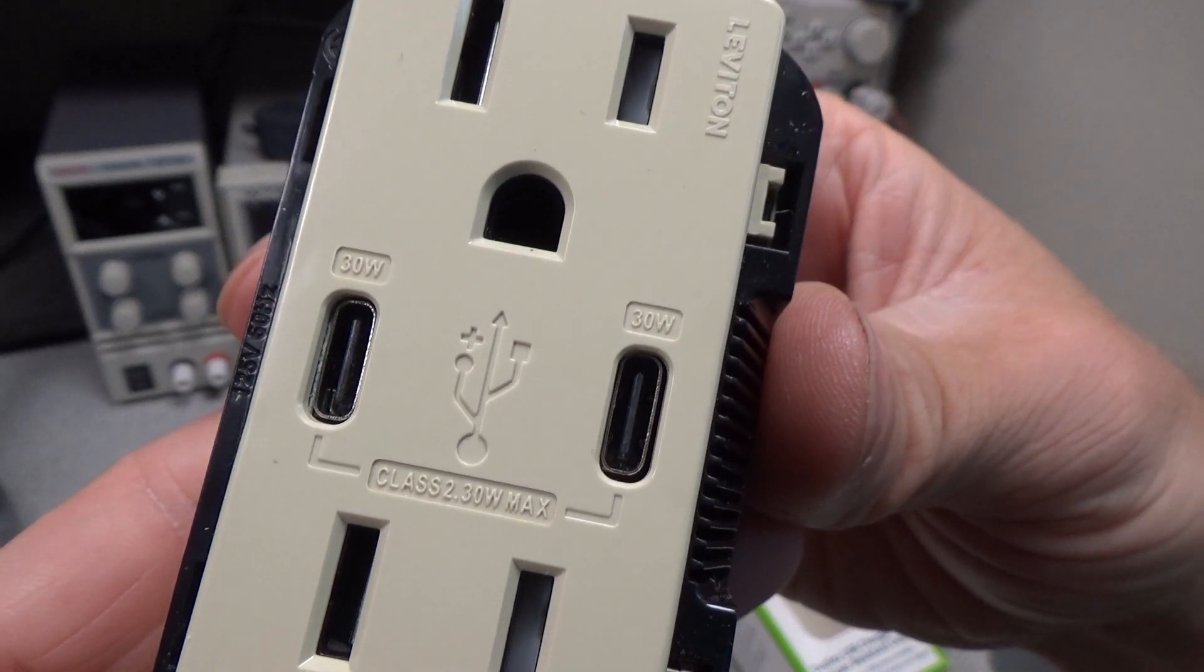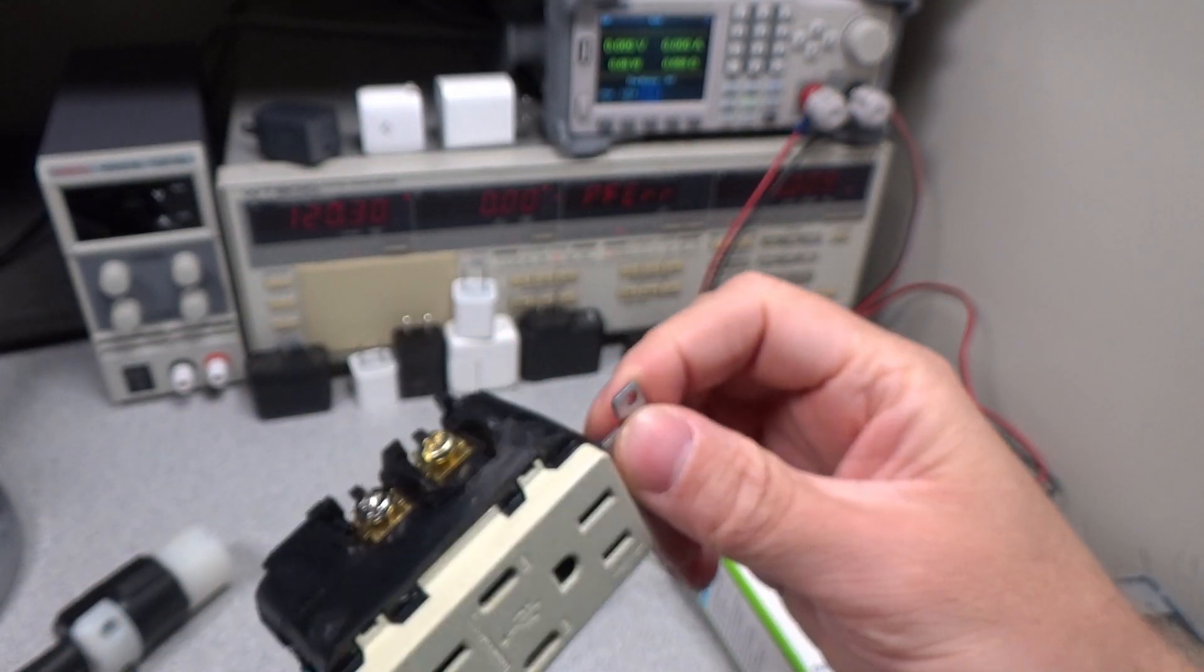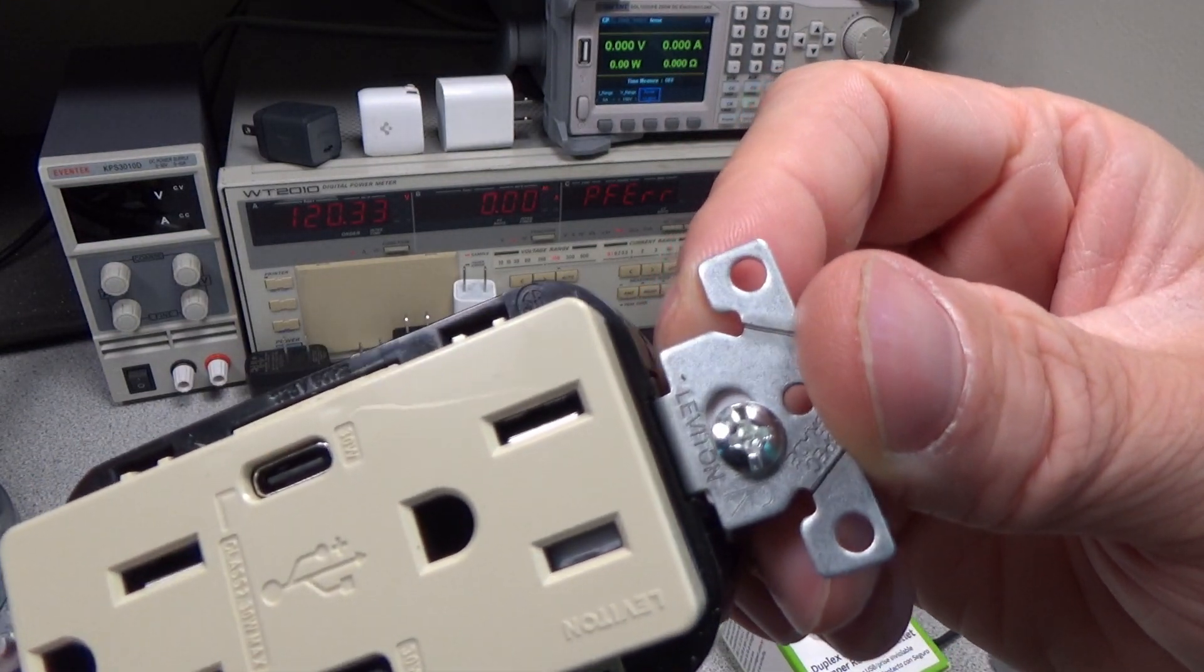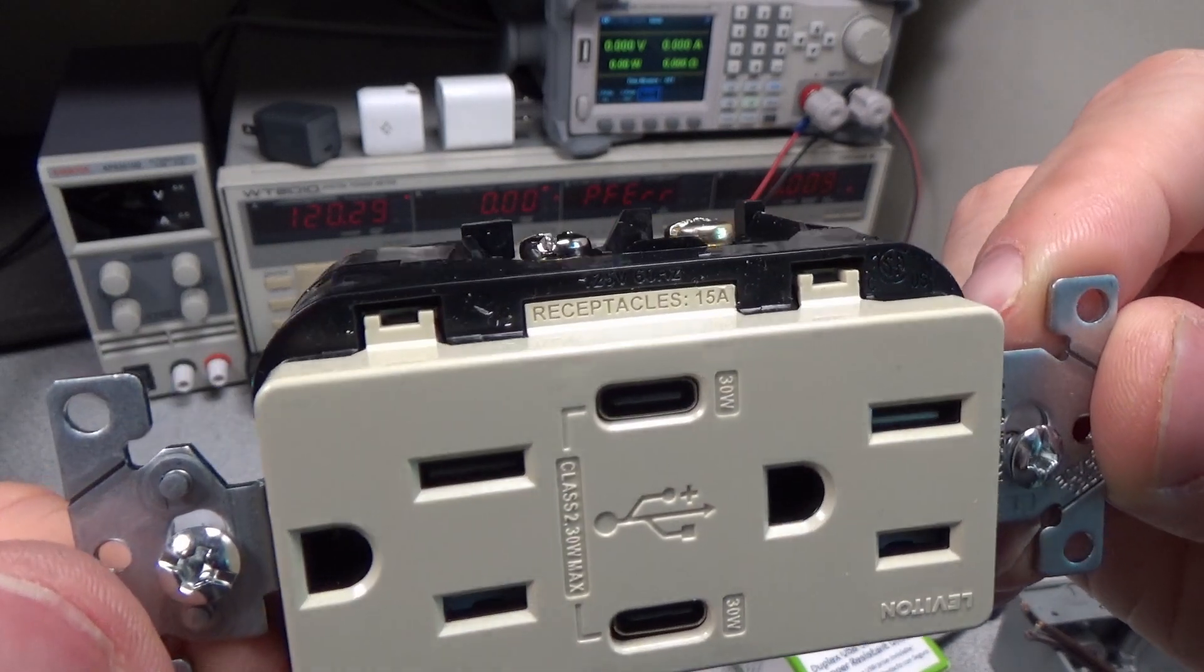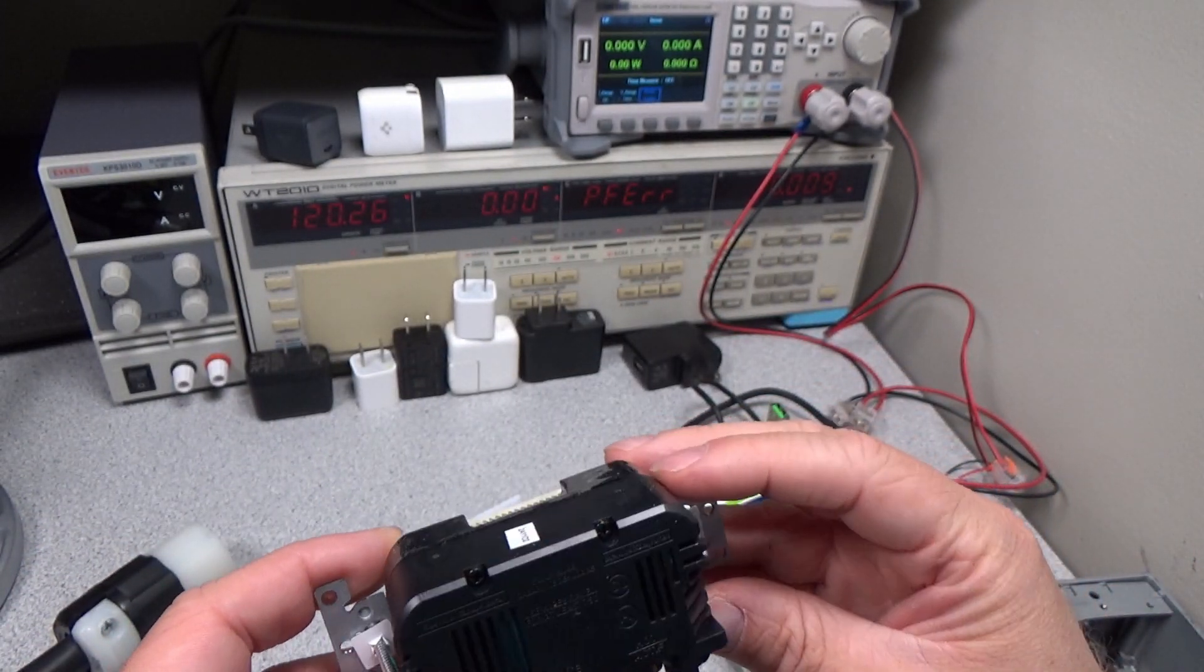Overall, this shares some similar qualities to the other outlets. You can see it's very chunky on the back, so it does take up a lot of space in the box. It's a similar type thing where you're not going to have a lot of room to put other wires inside the box. So it's really one wire in to this outlet, and that's about all you can fit in there.